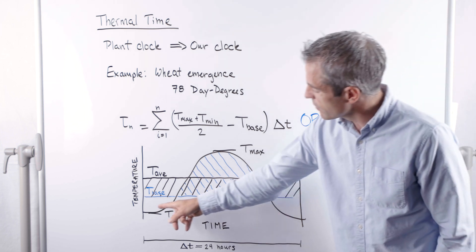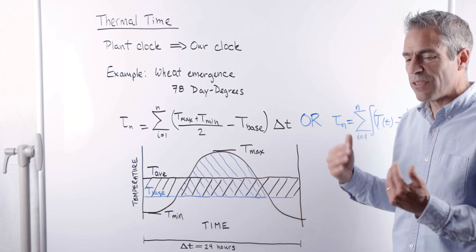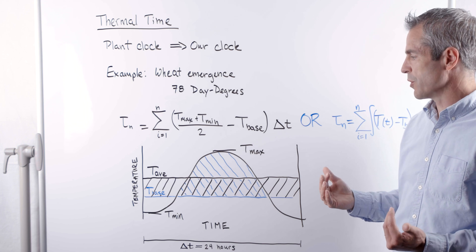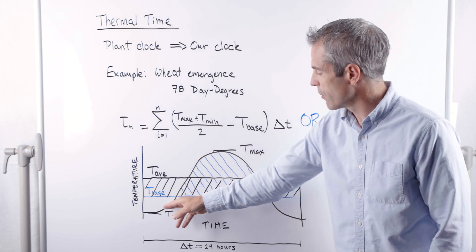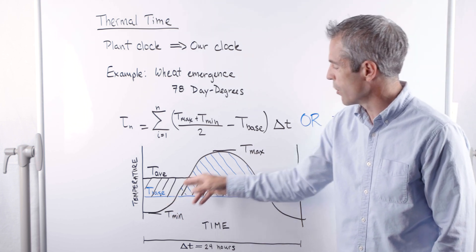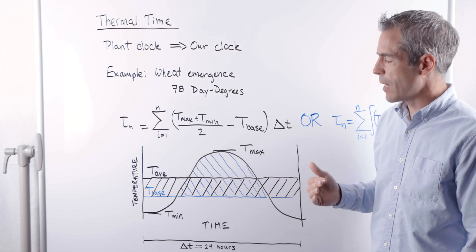Now this black line here is just what I've drawn as a typical diurnal temperature swing. So it's going from a minimum, of course, in the early morning up to a maximum sometime in the afternoon.